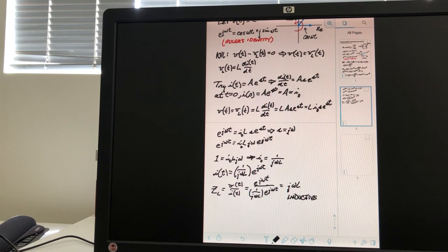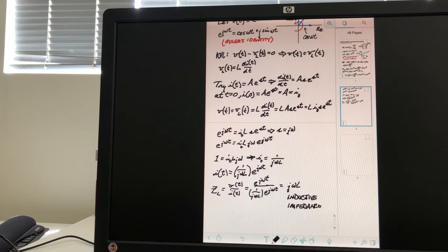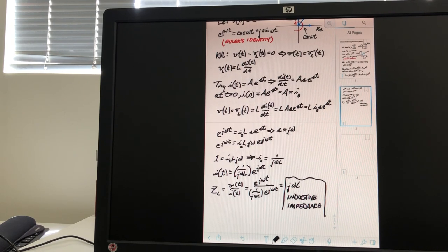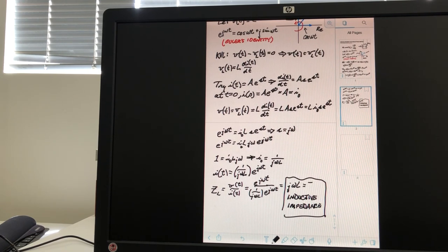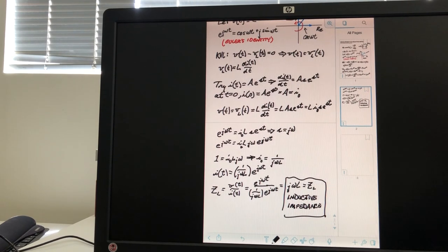Inductive impedance. J omega L, inductive impedance. And I'll just write it again in here, Z sub L. Okay. So that's it. Thank you.